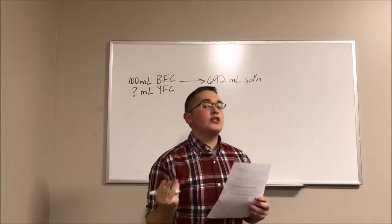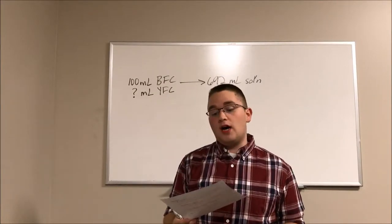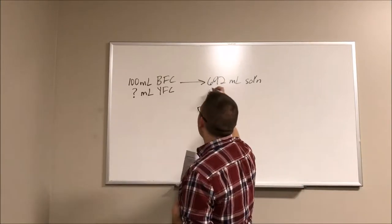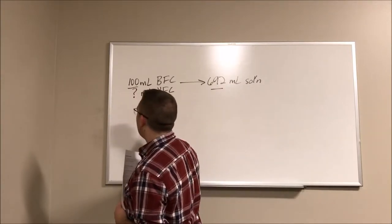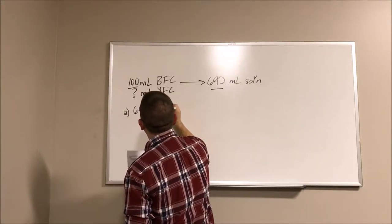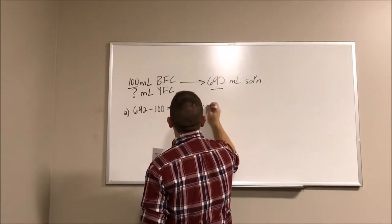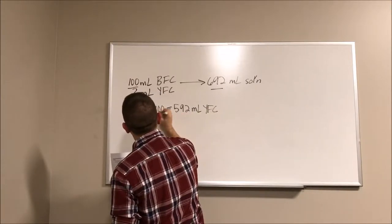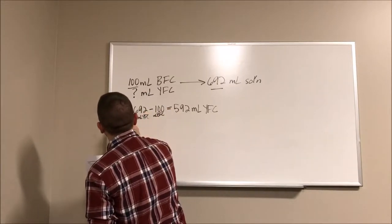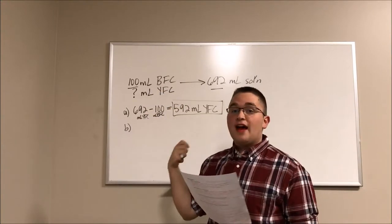So we have four questions that we're going to answer today regarding to this scenario. Number one, how much yellow food coloring is going to be needed to reach the final solution? It's pretty easy to start off. So we want to end with 692 and we have 100. So 692 minus 100 yields 592 milliliters of yellow food coloring will be needed.